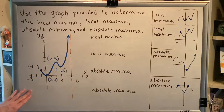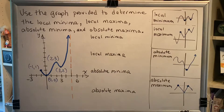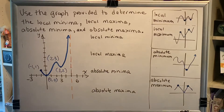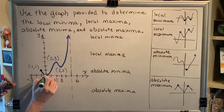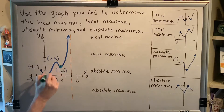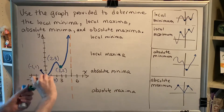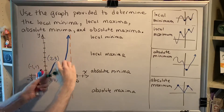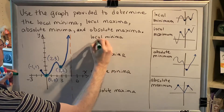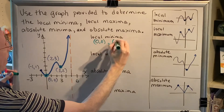So let's apply these ideas now to this graph. For local minima, we're looking for something that looks like a valley with a point at the bottom. How many local minima does this graph have? The answer is two. This one right here and this one right here are both at the bottom of the valley, with points to the left and to the right of each. So there are two local minima: (0, 0) as well as (3, 2).